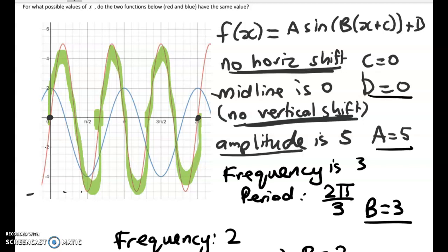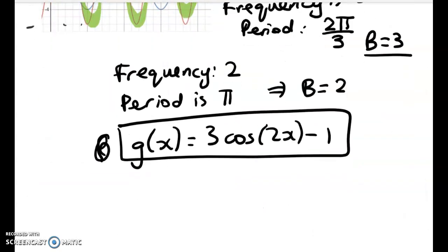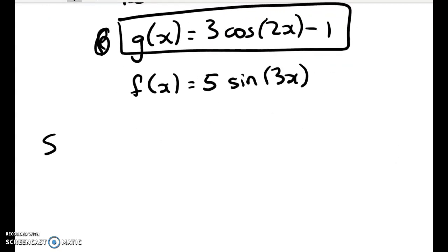That gives me b is equal to 3. So we're ready now to write that function. We've got g of x, and we can get f of x. So f of x will be 5 sine of 3x. So to find where they're equal, we have to equate those two functions. We need to solve 5 sine 3x is equal to 3 cos of 2x minus 1.